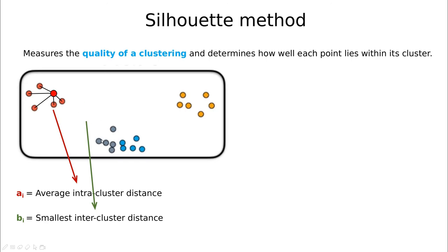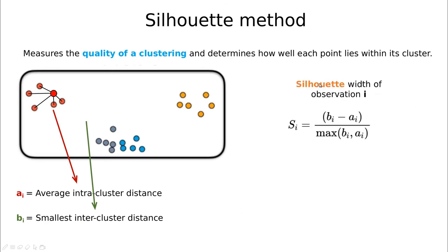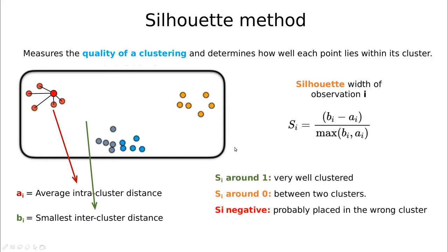The idea is to find which neighboring cluster is closest to this point — in this case probably this one or that one. This is called B_i, and we repeat this for all data points. We define the silhouette coefficient S_i using A and B. If S_i is around one, the point is very well clustered — that means A is almost zero because all points in the cluster are packed together, and B is large, so B minus A divided by the max of A and B gives approximately one.